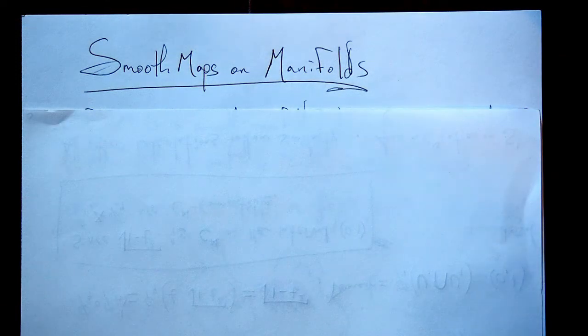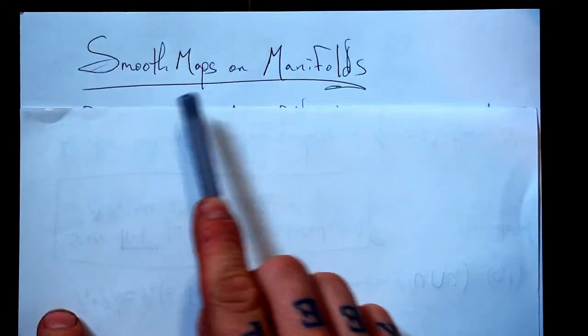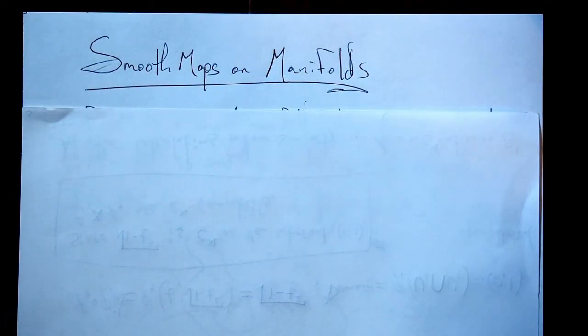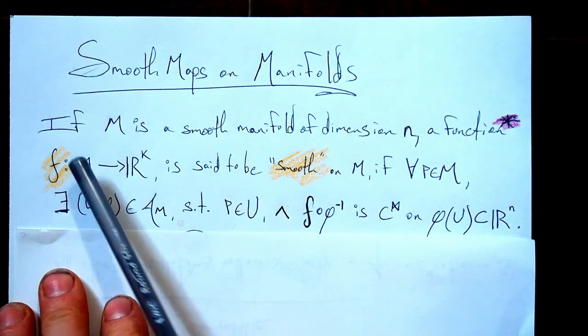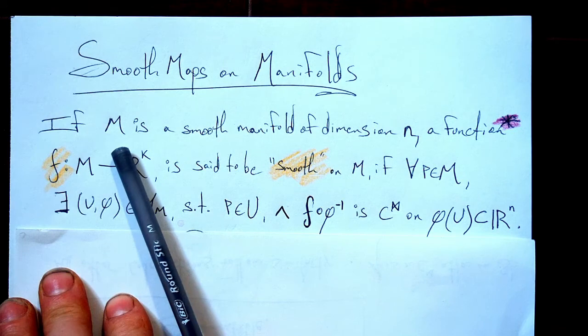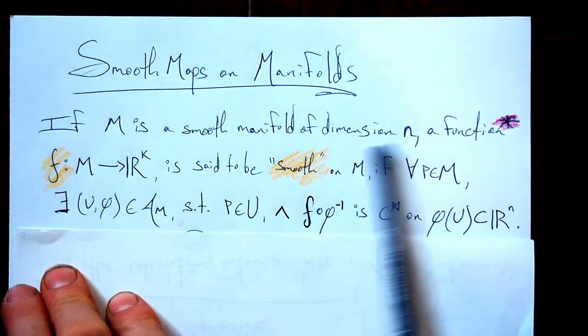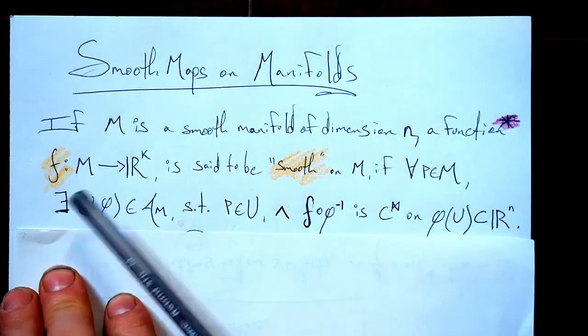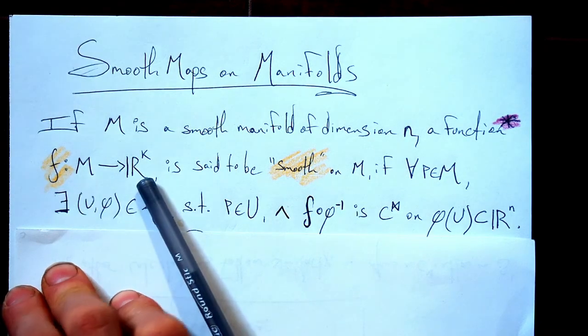Hey everybody, I got another video for you talking about smooth manifolds, in this case smooth maps on manifolds. I'm going to make this video today a quick one because believe it or not, I have a date. Well, if we're talking about smooth maps on manifolds, we're going to need to start off with a manifold that is itself smooth. Here we're saying it's of dimension n and a function that maps from our manifold to ℝ^k.